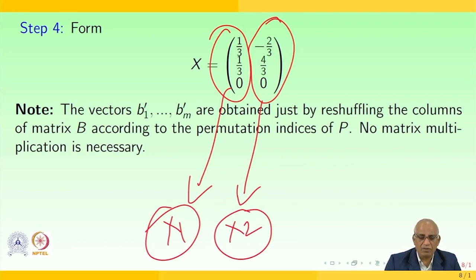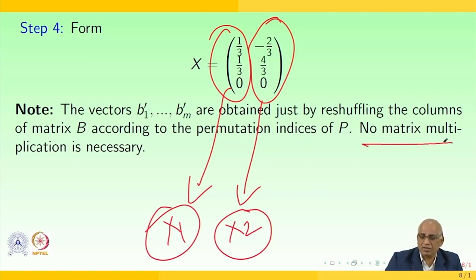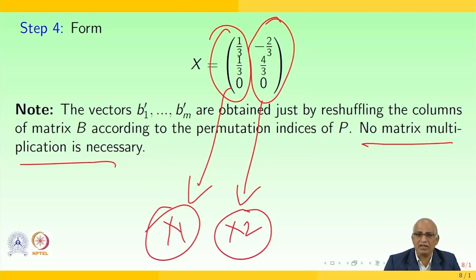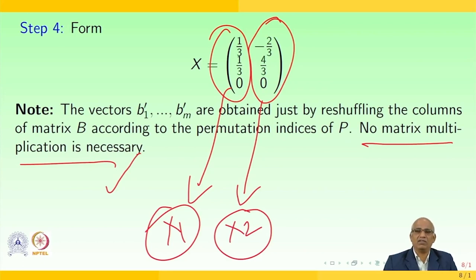The vectors b1', b2', ..., bm' are obtained just by reshuffling the columns of matrix B according to the permutation indices of matrix P — no matrix multiplication is necessary. This is the specialty of Gaussian elimination with partial pivoting whenever you have more than one right-side vector.